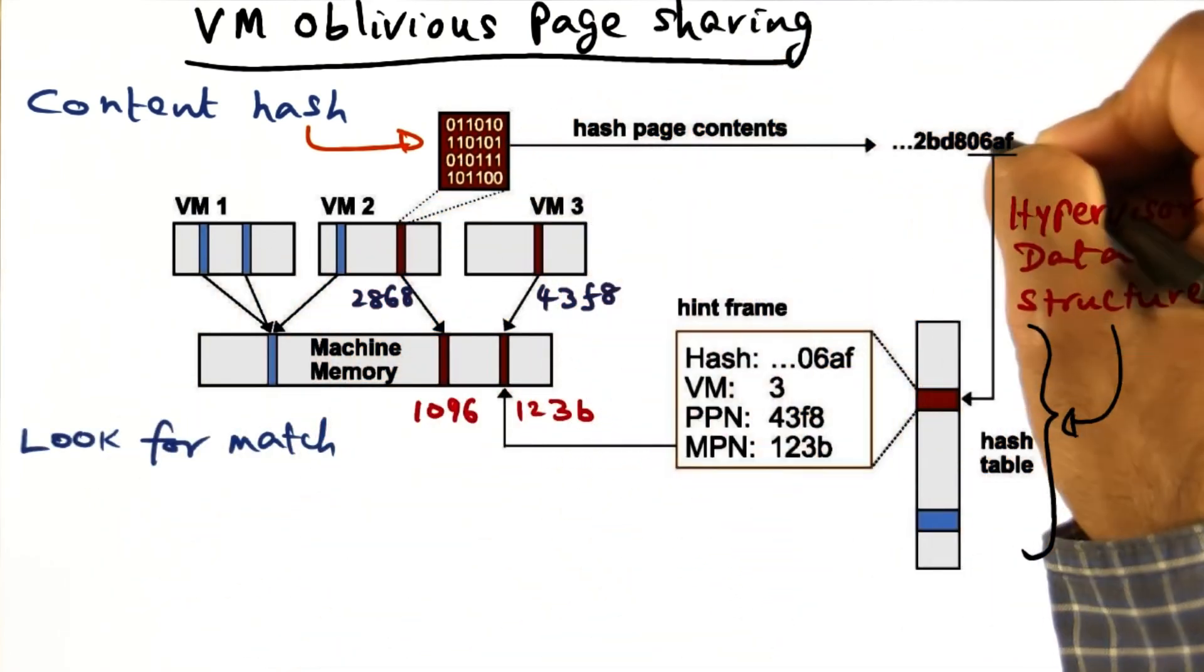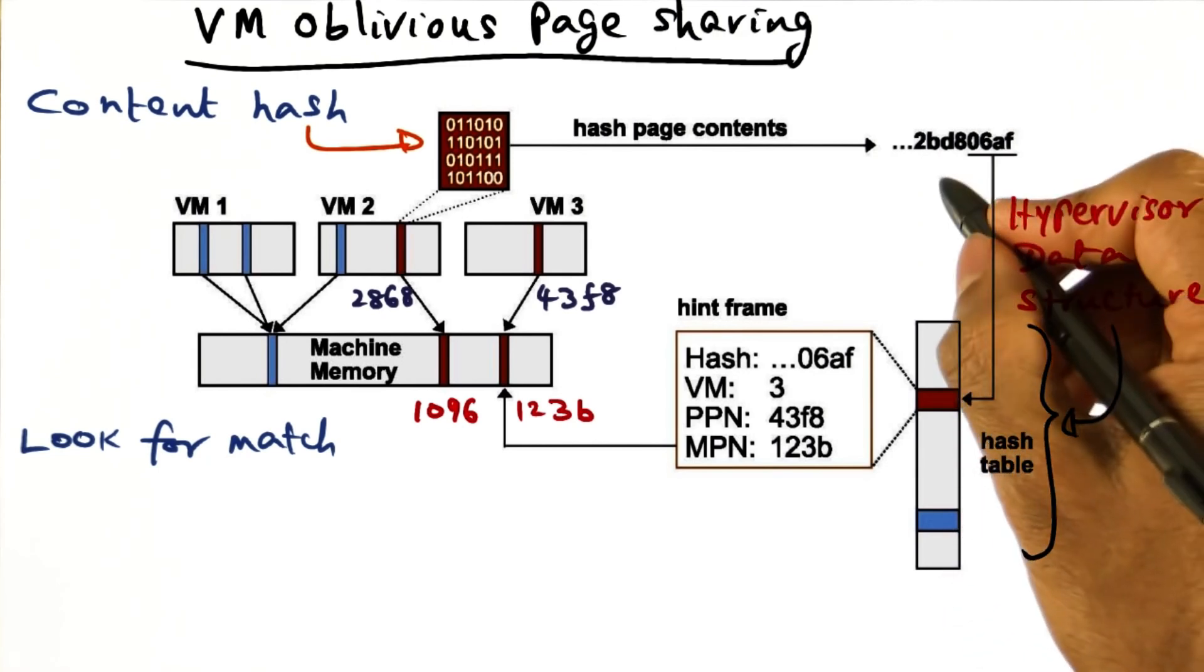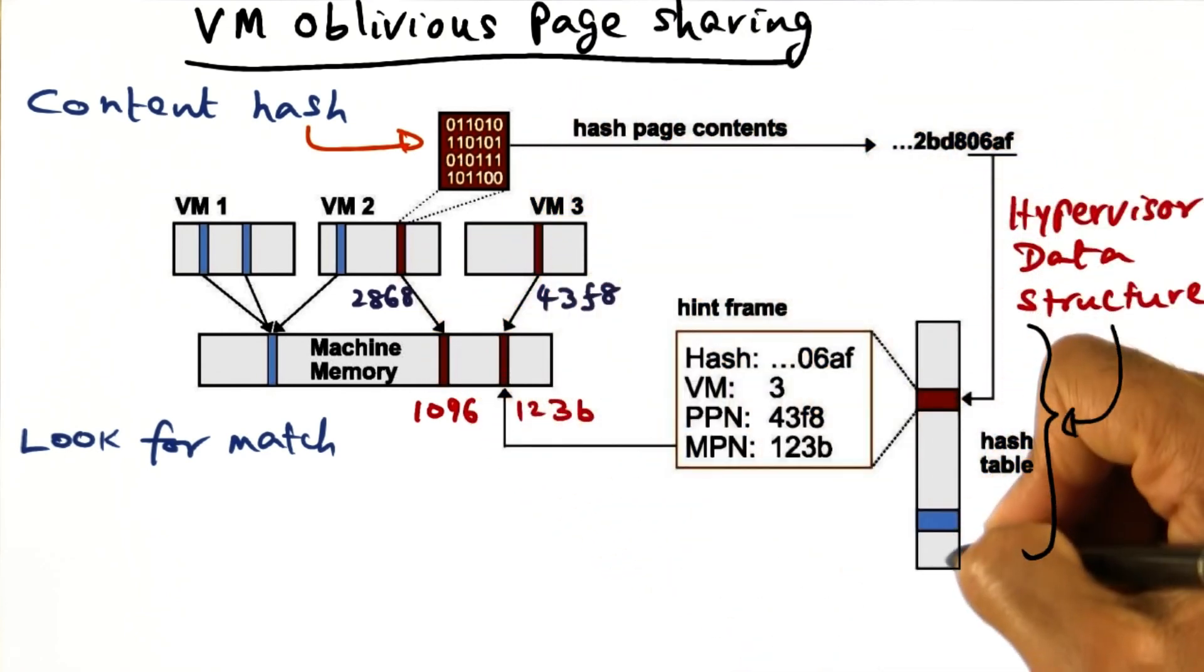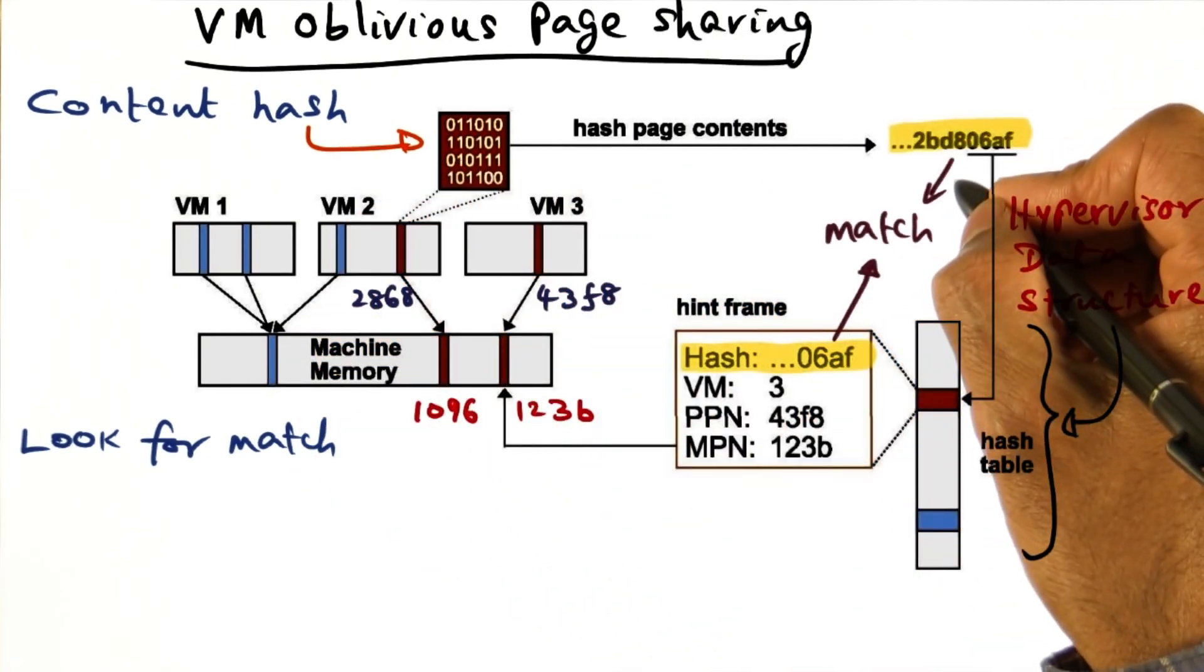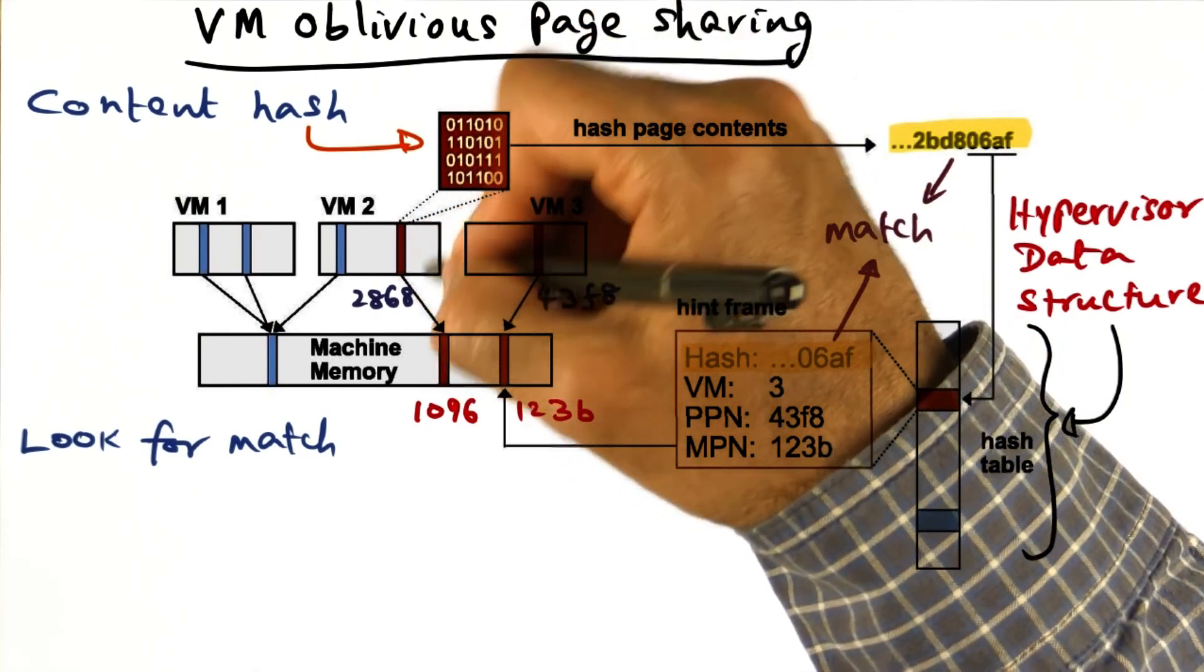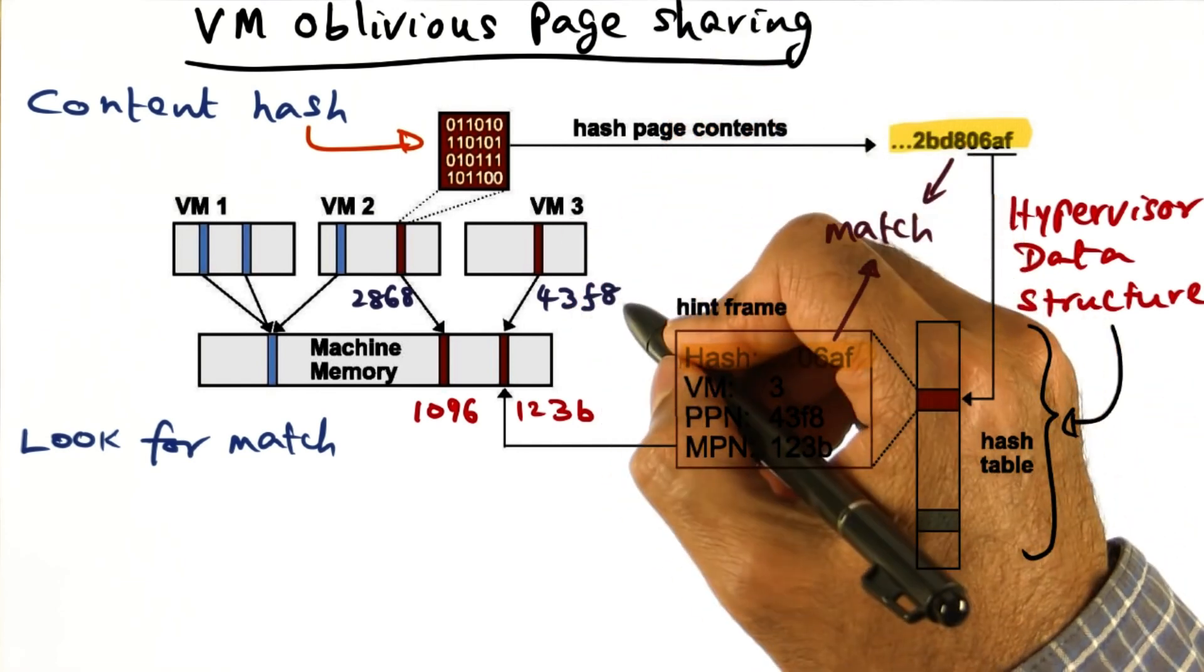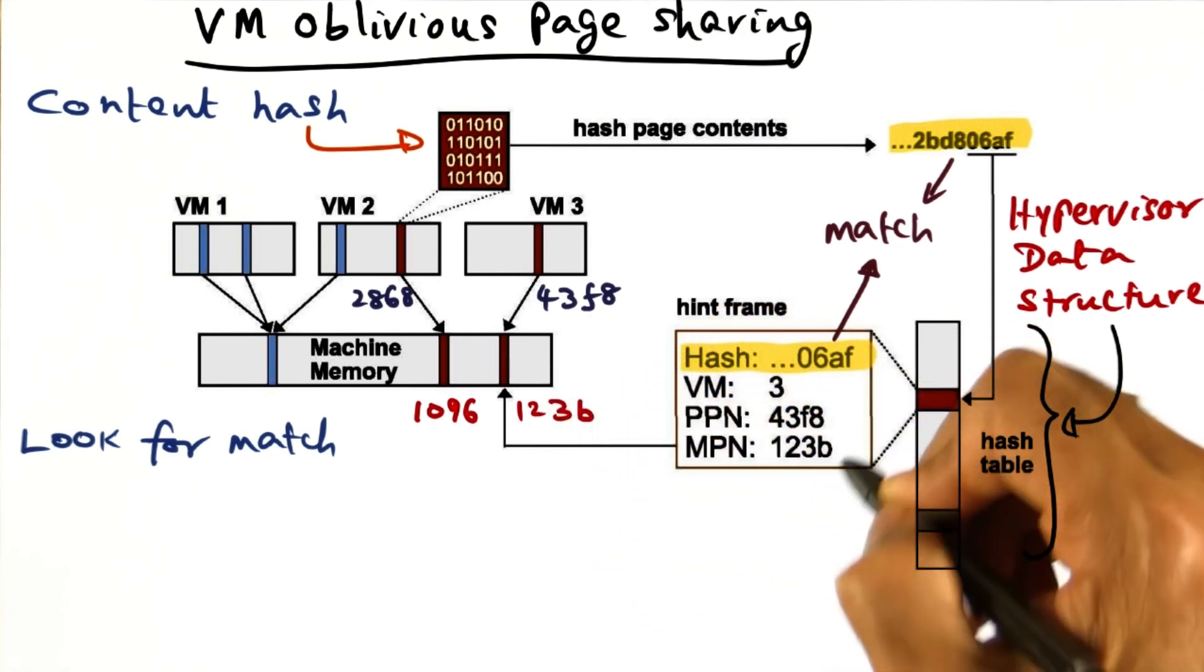Now we take this content hash and look through the hypervisor's data structure to see if there is a match between this content hash that I created for this page and any page currently in the machine memory. Well, we have a match. We have a match between the content hash for this page and the content hash of the page contained in VM3 43F8, which is mapped to MPN 123B.